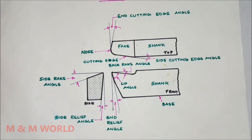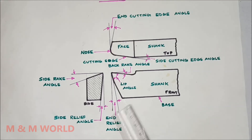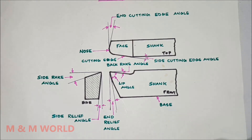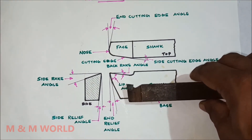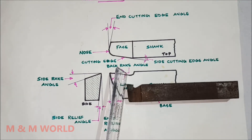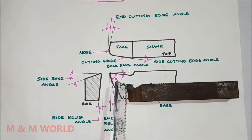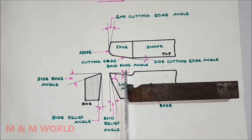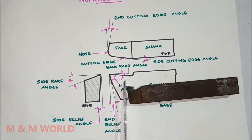The next one is the end relief angle. It is the angle between the portion of the end flank immediately below the end cutting edge and a line perpendicular to the base of the tool, measured at right angles to the end flank. In the front view, this is the end flank, and the angle between the end flank and a line perpendicular to the base is the end relief angle.